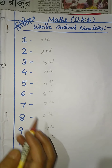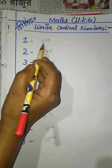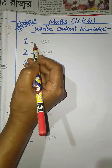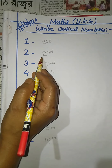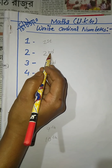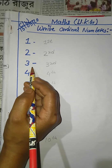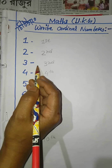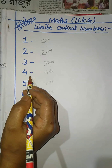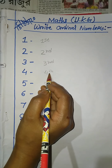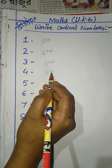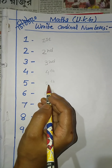So everyone, how is this process written? One — first is written as one then s-t, so 1st means first. Two ordinal number is second — how do we write second? Two and n-d, so 2nd means second. Three ordinal number is third — written as three r-d, so 3rd means third. Four ordinal number is fourth — written as four t-h, so 4th means fourth.